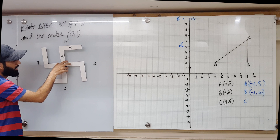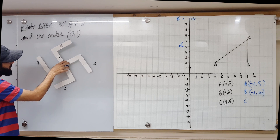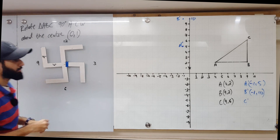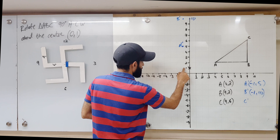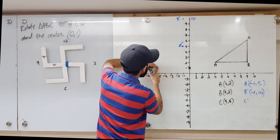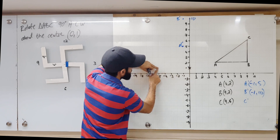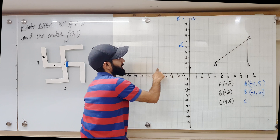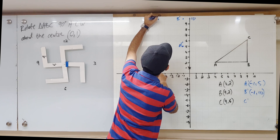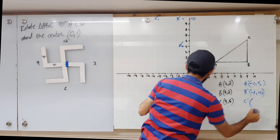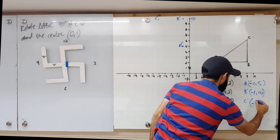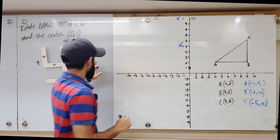Now what happens if I rotate this 90 degrees anti-clockwise? For this, I have to go five left and then nine up from the center. Five left — one, two, three, four, five — and then nine up from the center. That takes me to 10 on the y-axis. The coordinates of C prime are (-5, 10).